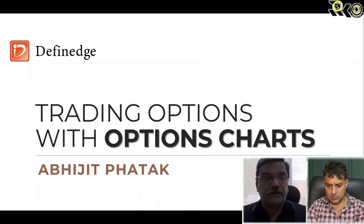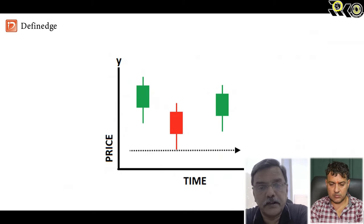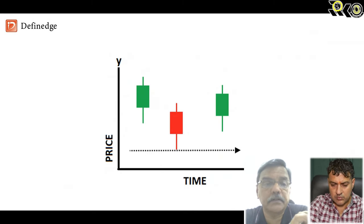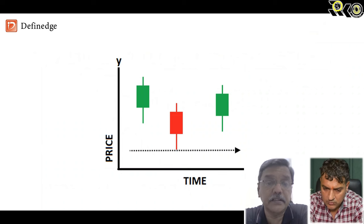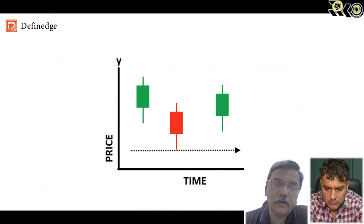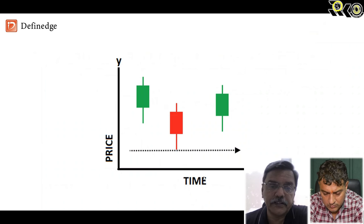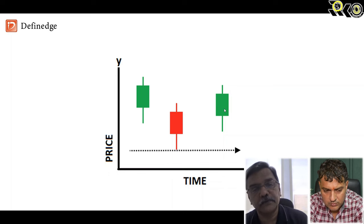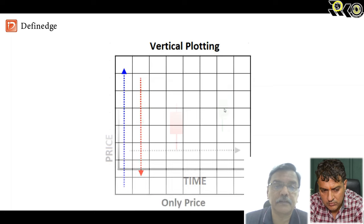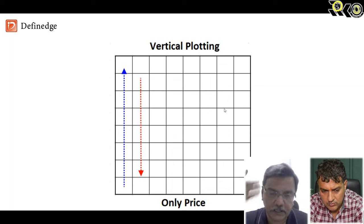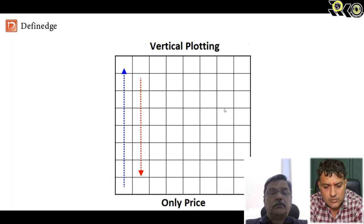Let me briefly explain point and figure charts. In a conventional candlestick or bar chart, there are two axes — price on the Y-axis and time on the X-axis — and the chart moves horizontally, one candle per time frame. In point and figure, there is no time element on the X-axis. Price moves vertically. When people started plotting point and figure charts perhaps 200 years ago, they would write on graph paper — writing numbers as the stock went up, showing a vertical rise, then a downtrend in the next column.